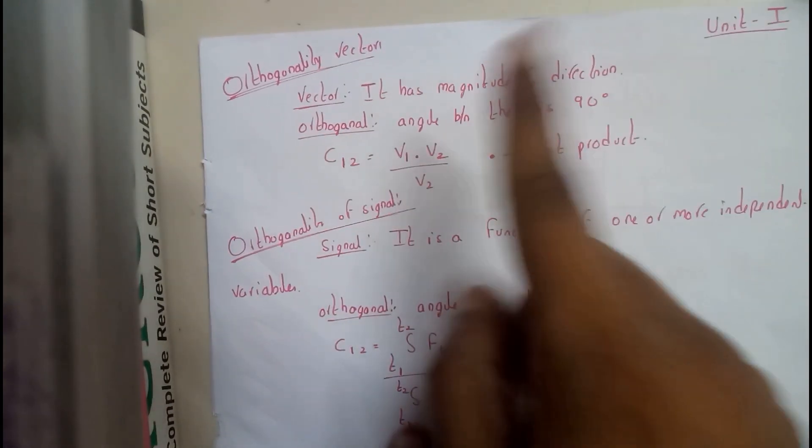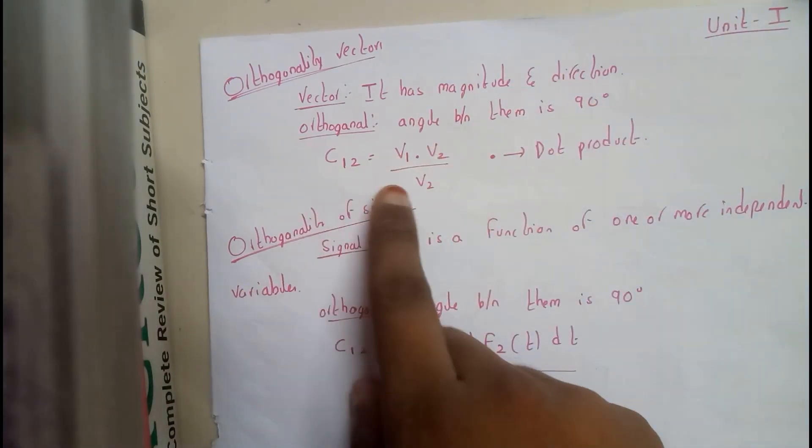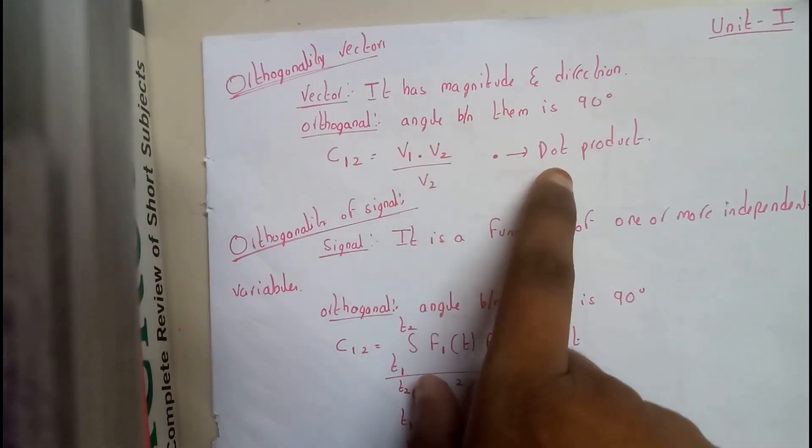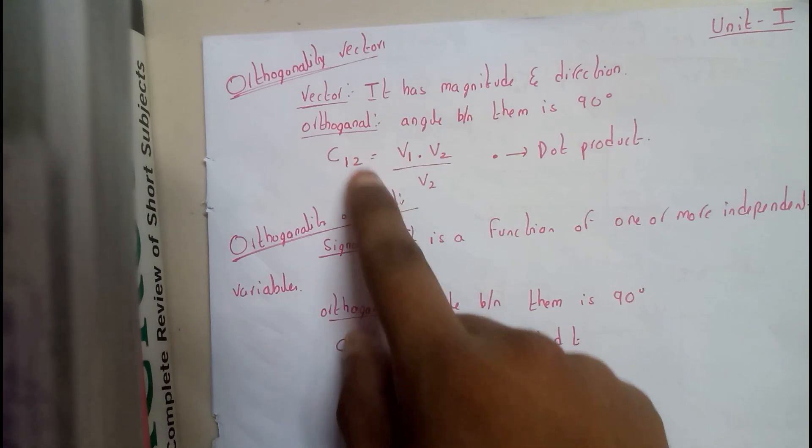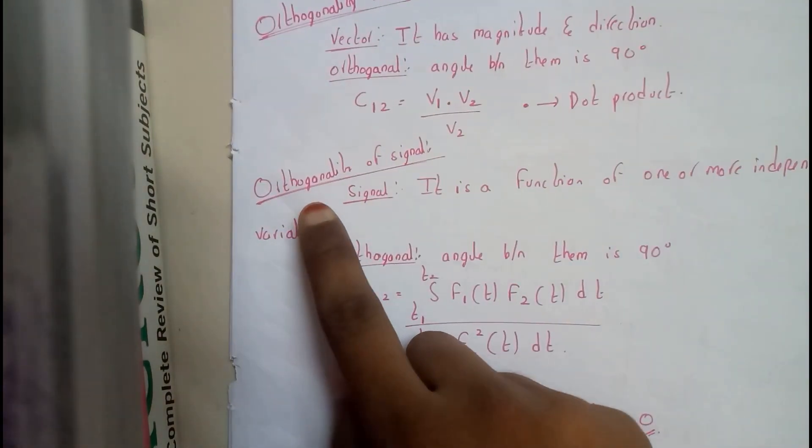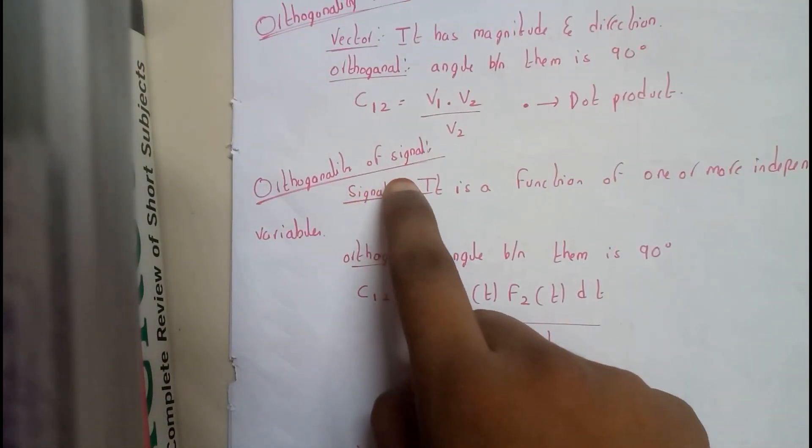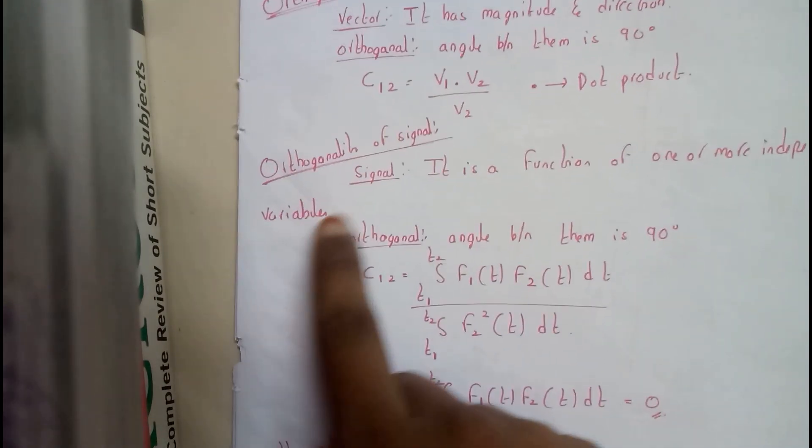c12, when we represent one vector in terms of another, equals v1 dot product v2 by v2. This is a formula we should remember. Moving on to orthogonality of signals - a signal is a function of one or more independent variables.